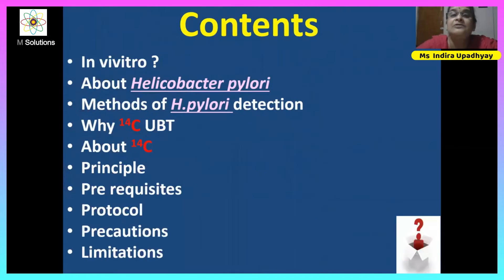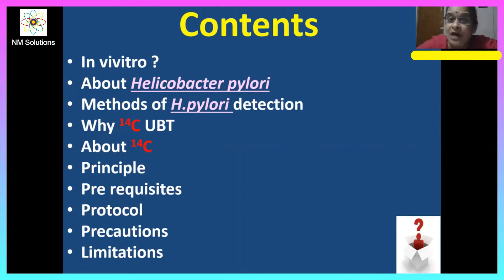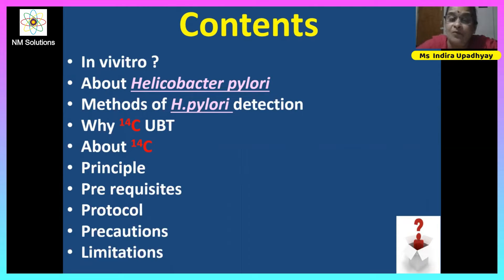The contents of this presentation will cover: what is in vivo, about Helicobacter pylori, methods of H. pylori detection, why 14-carbon UBT, about the radionuclide 14-carbon, the principle, prerequisites, protocol, and precautions and limitations of this test.